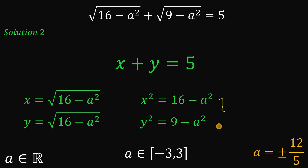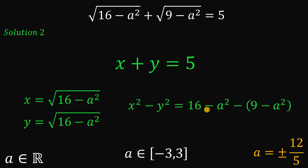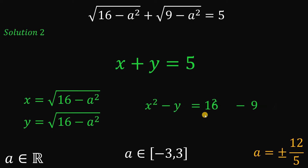If we subtract the two squared equations, we can eliminate the negative A squared terms — negative A squared on one side and positive A squared on the other cancel out. So X squared minus Y squared equals 16 minus 9, which equals 7.